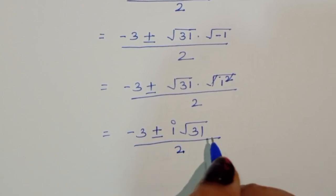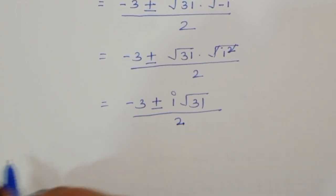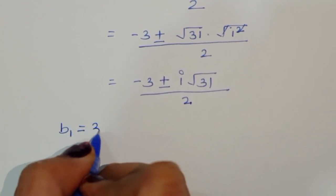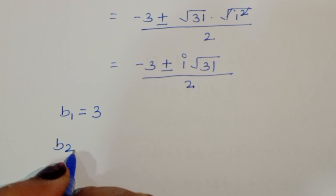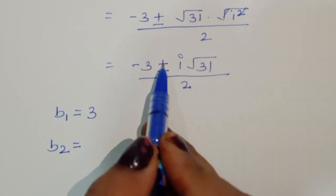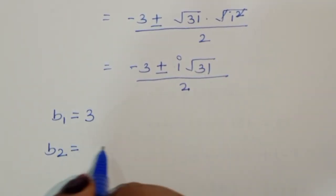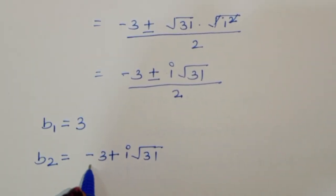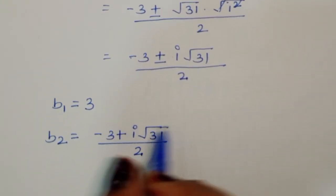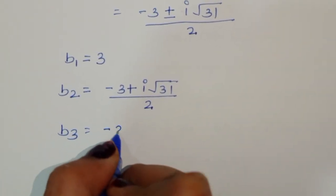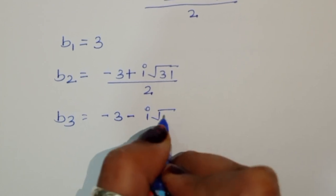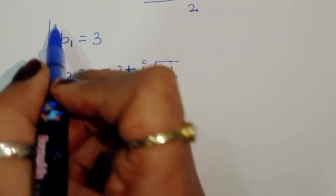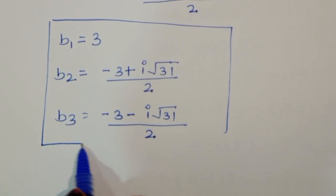This is the value of b. We got three values of b: b₁ = 3 from equation 1; b₂ = (minus 3 + i√31) divided by 2; and b₃ = (minus 3 minus i√31) divided by 2. So these are the three values of b — b₁, b₂, and b₃.